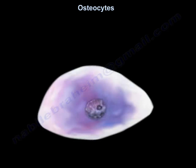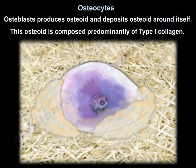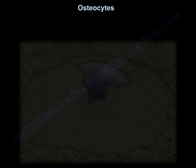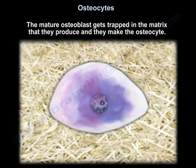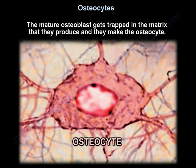The osteoblast produces osteoids and deposits the osteoids around itself. This matrix is composed predominantly of type 1 collagen. The mature osteoblast gets trapped in the matrix it produces, and thereby becomes the osteocyte.